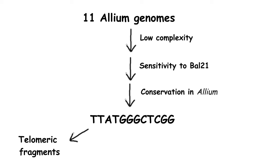In addition, the candidate sequence labeled chromosomal ends of garden onion upon hybridization and was particularly sensitive to a digestion of chromosomal ends.